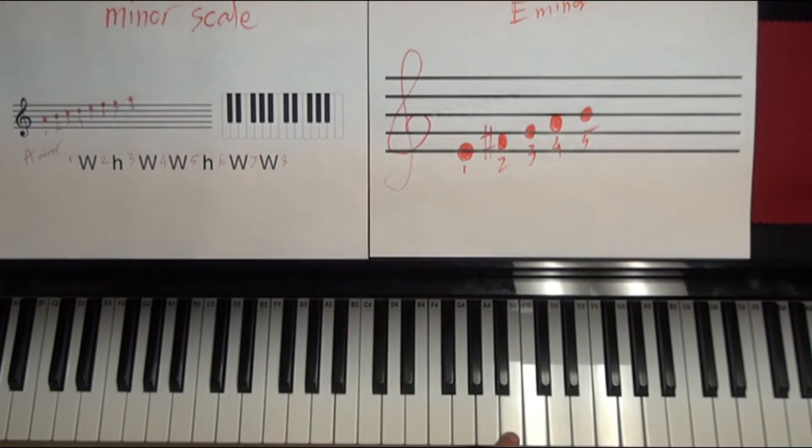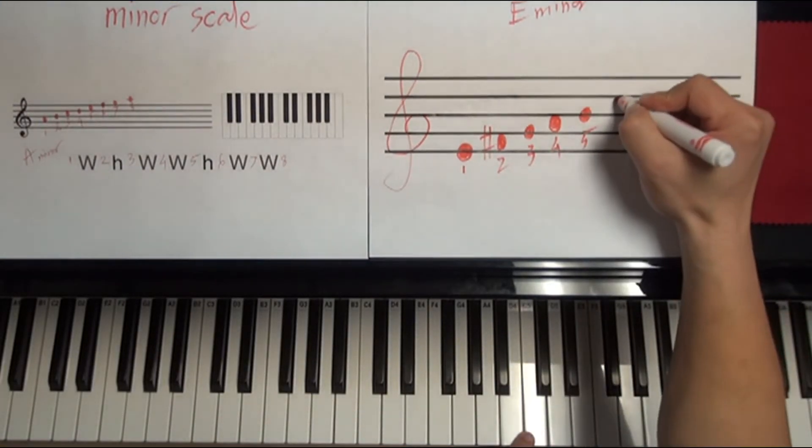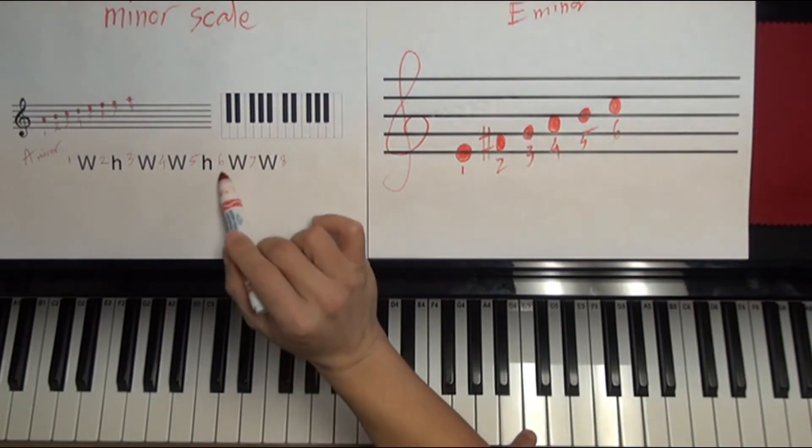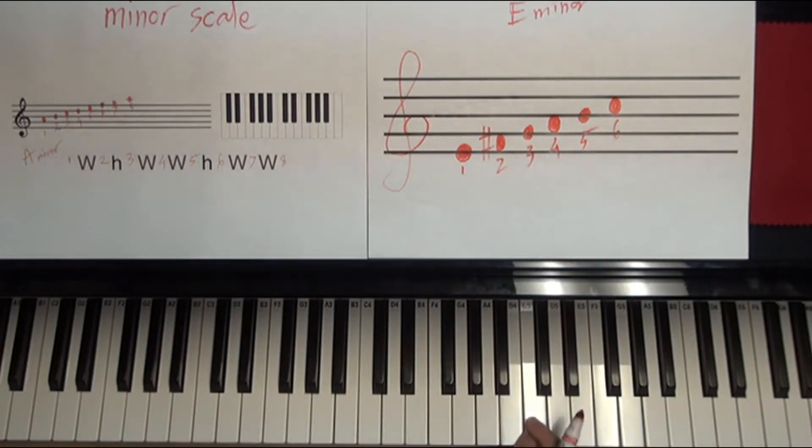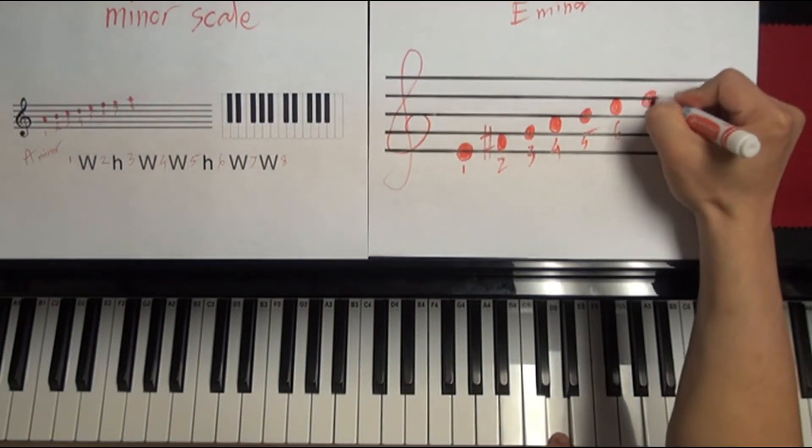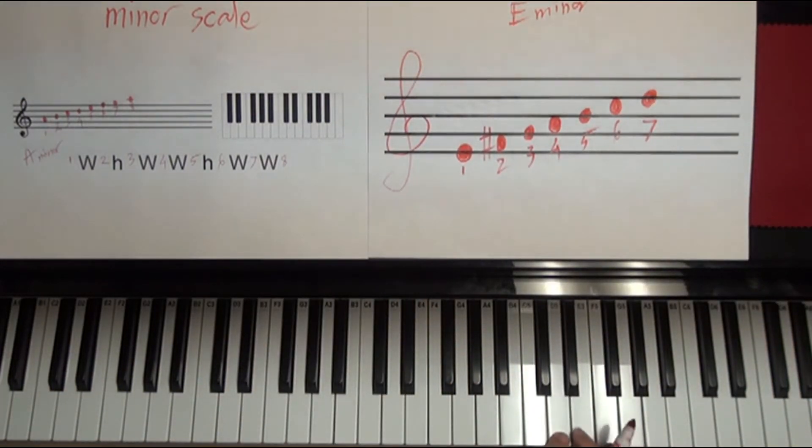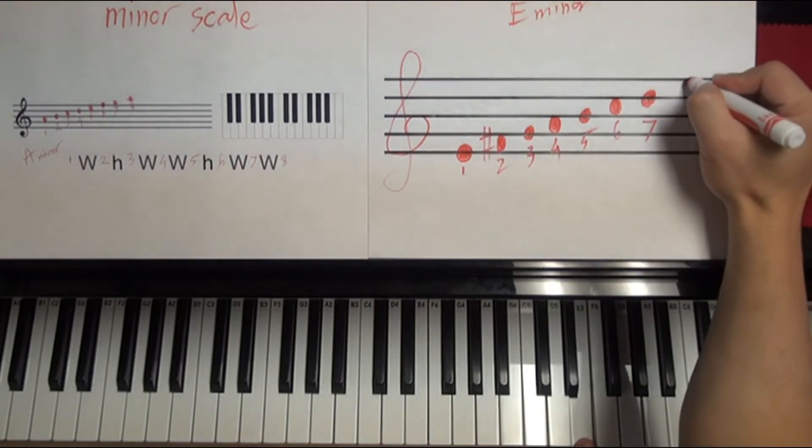And now from 5th to 6th, that's a half step that's required. So, so you go from here to here, that's a half step, that's perfect. 5th to 6th. Now from 6th to 7th, it has to be a whole step. So from C to D, that's a whole step, right? Half, half. So that's a whole step. And then from 7th to 8th, it's a whole step too. So perfect to E.